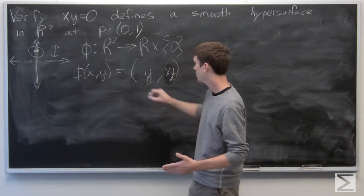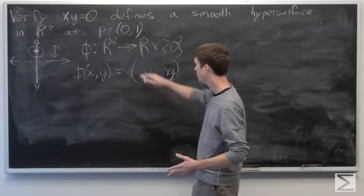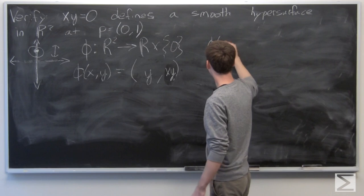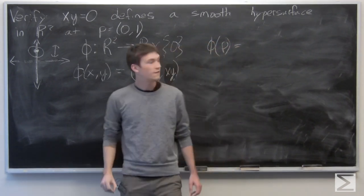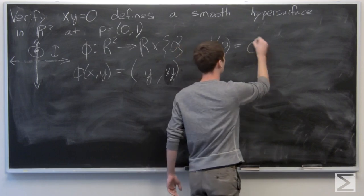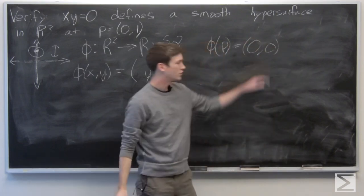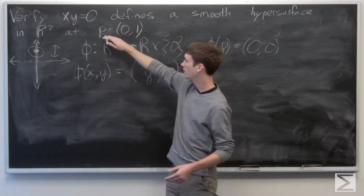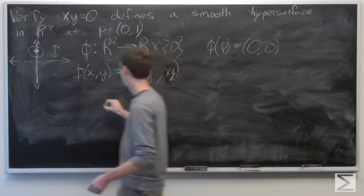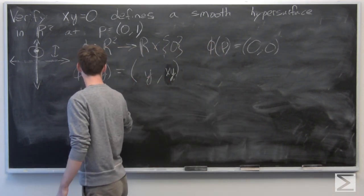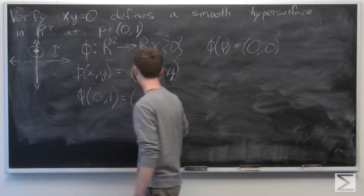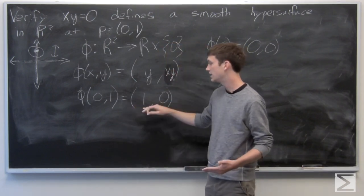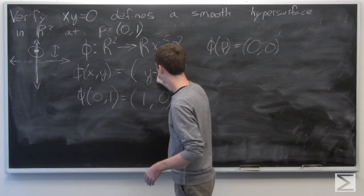So in order to be a smooth hypersurface, not only do we want phi to be from R2 to R cross 0, but we want phi of p to be the origin. So if we let y be the first component, when we plug in p to our function phi, we get 1, 0. But we want this to be taken to the origin, so we'll subtract 1 as well.